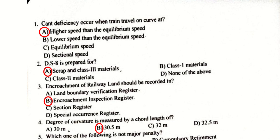Cant deficiency occurs when a train travels on a curve at a higher speed than the equilibrium speed. Question number two: DSAT is prepared for scrap and Class 3 materials.